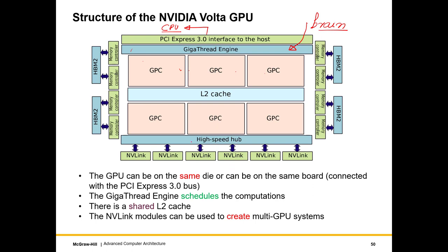High-speed hubs via NVLink interconnects allow GPUs to be interconnected. There are also eight memory controllers connected to high bandwidth memory, which we will study in chapter 10. The broad takeaway from this is that every GPU has a large number of GPU Processing Clusters — six of them on a Volta GPU — and this is a deeply hierarchical structure.